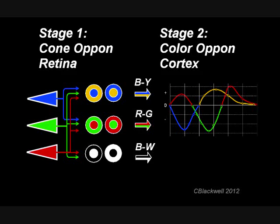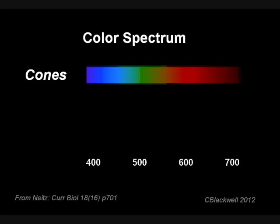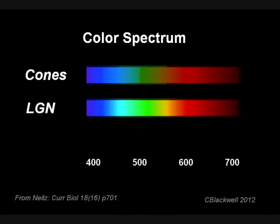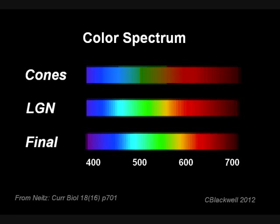What does it mean to match our perceptions? If color processing was only by the three cones, this is approximately what the spectrum would look like. After cone opponent processing, this is what arrives at the lateral geniculate nucleus before reaching the brain. Most of the colors are there, but they are not in quite the right places. After the final stage of processing, the colors end up in the places we are accustomed to seeing them.